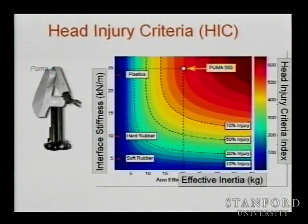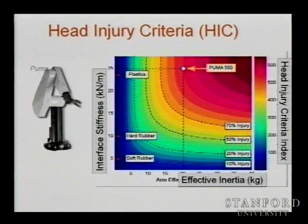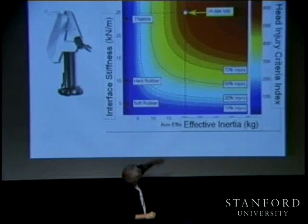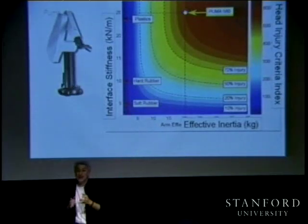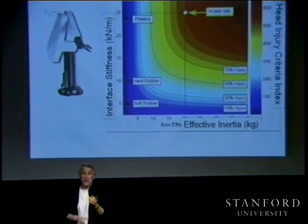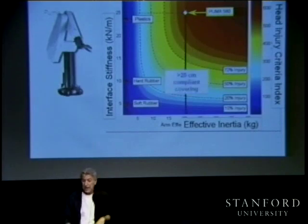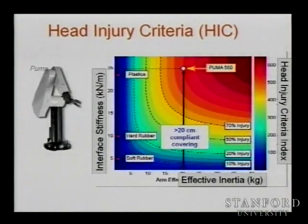In a plane where we look at effective inertias and stiffness, a PUMA robot sits at almost 90% risk of serious injury. The only way to make it safe is to cover it with almost 20 centimeters of compliant material.